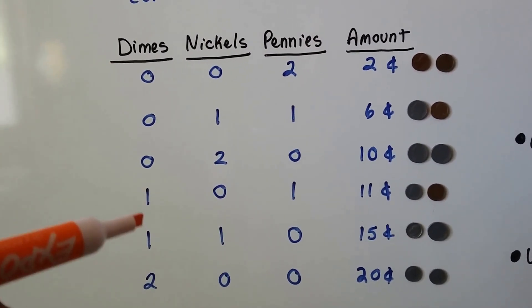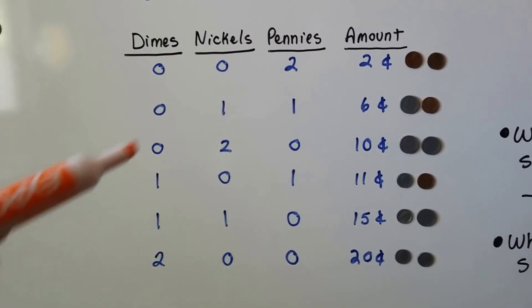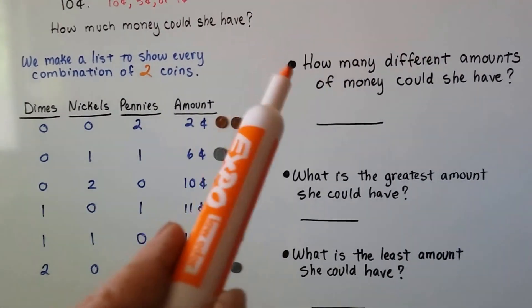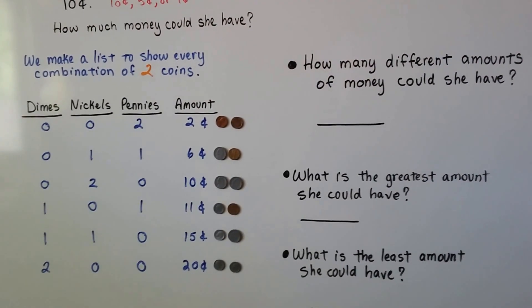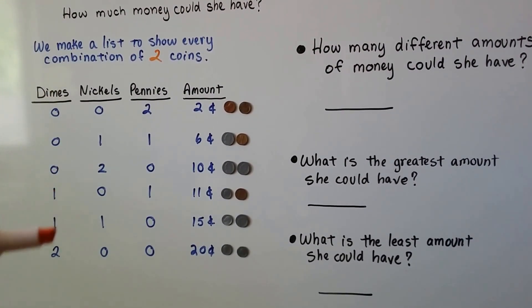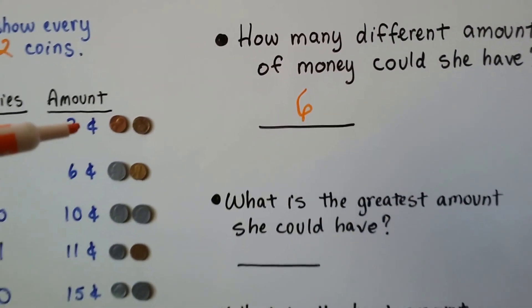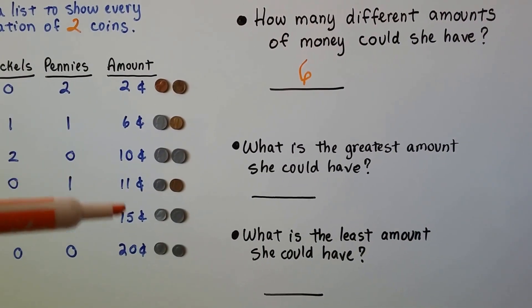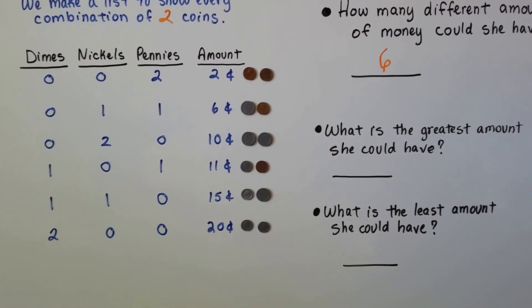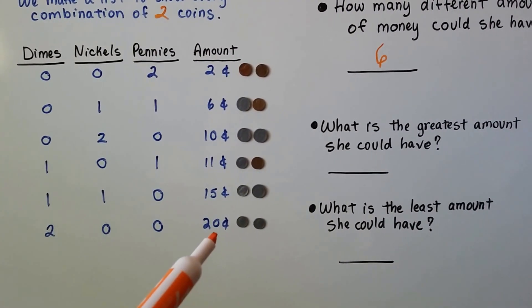Those are all the different choices she could have for two coins. We're just making a table to show what they could be. How many different amounts of money could Tala have? She could have one, two, three, four, five, six different amounts of money. And what is the greatest amount she could have? That would be twenty cents — that's the largest amount.